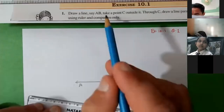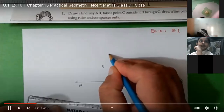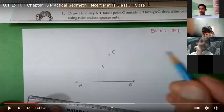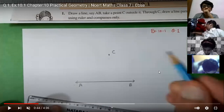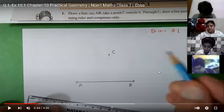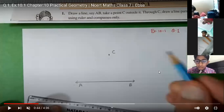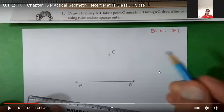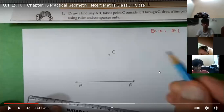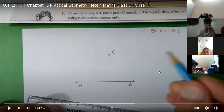It is given to take a point C outside the line AB, so you have to take a point outside this line. Draw line AB of any measurement and mark a point C outside it. Draw it with me, children — hurry up. All of you draw a line AB and mark a point C outside it.